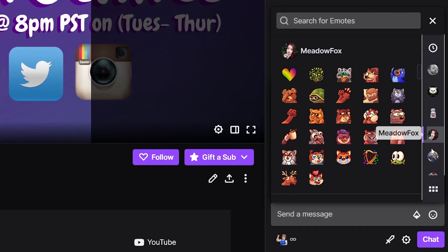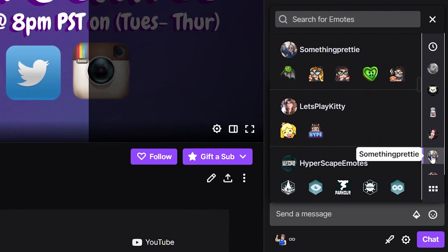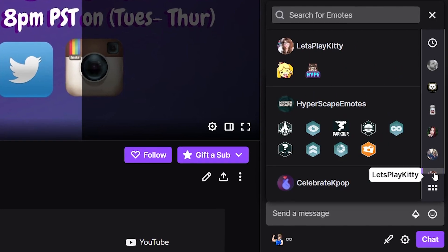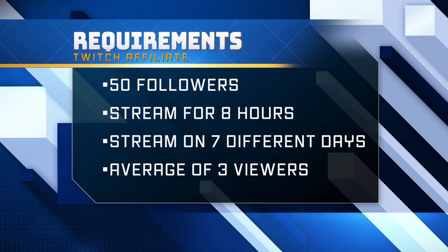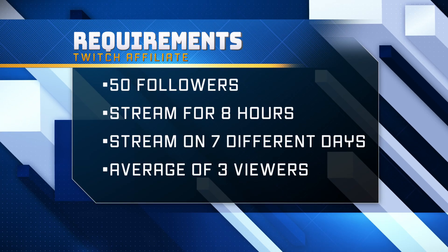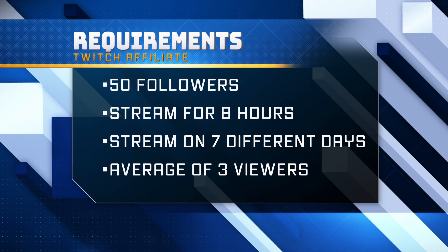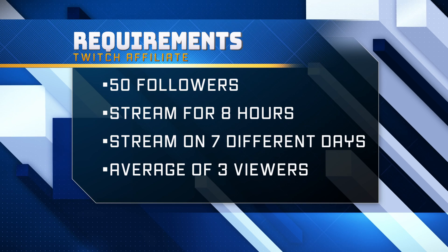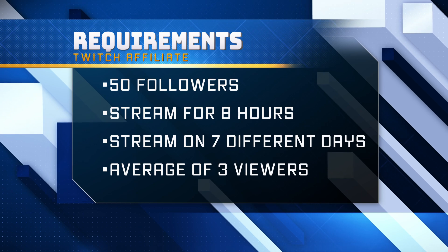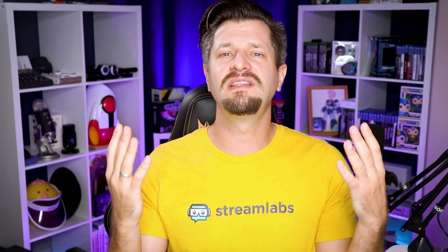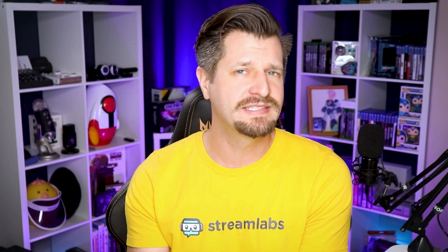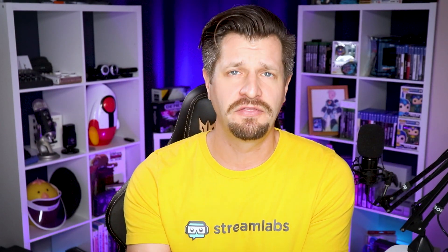To become a Twitch affiliate, you first must reach the following achievements in 30 calendar days: reach 50 followers, stream for eight hours, stream on seven different days, and have an average of three viewers. Now if you haven't unlocked Twitch affiliate yet, it's okay — I'm going to give you some quick tips to help you get there.